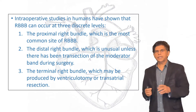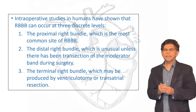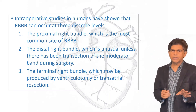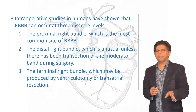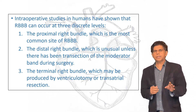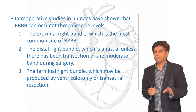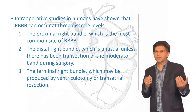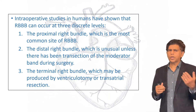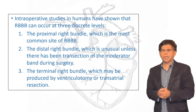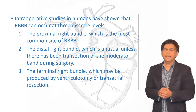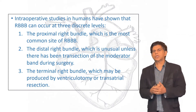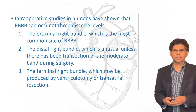Intraoperative studies have shown that right bundle branch block can occur at three anatomical levels. The first is the proximal right bundle, which is the most common site for right bundle branch block — remember, proximal right bundle is most common. The second is the distal right bundle, which is unusual unless there has been transection of the moderator band during surgery such as CABG. The third is the terminal right bundle, which may be produced by ventriculotomy or transatrial resection.